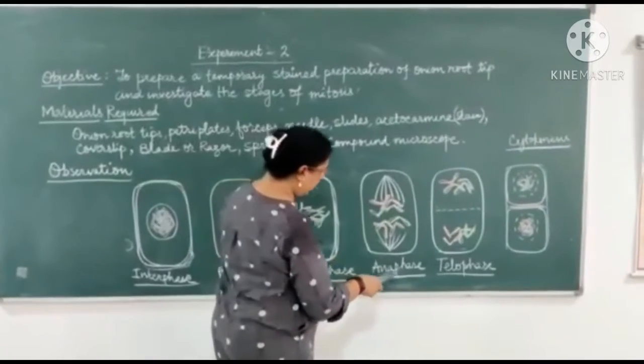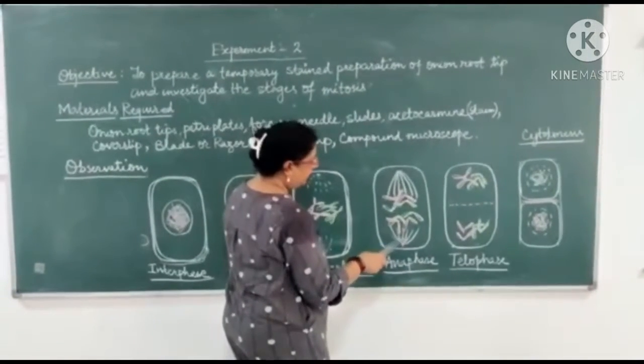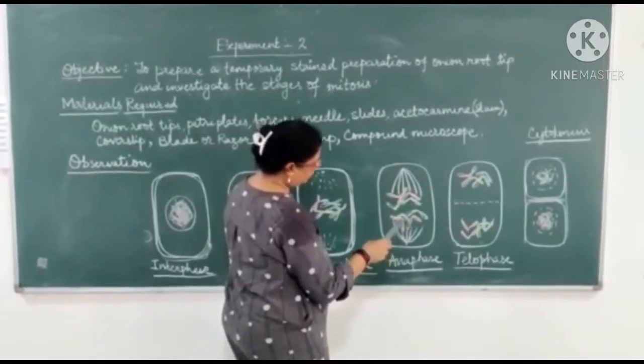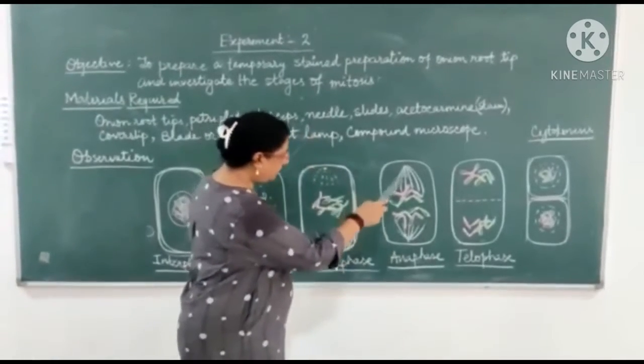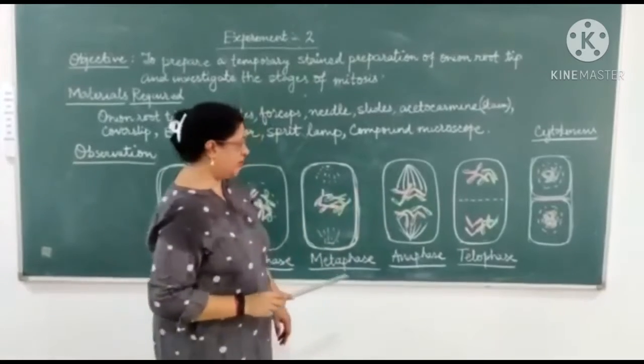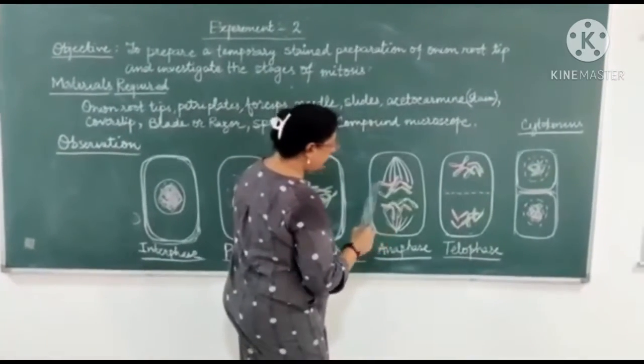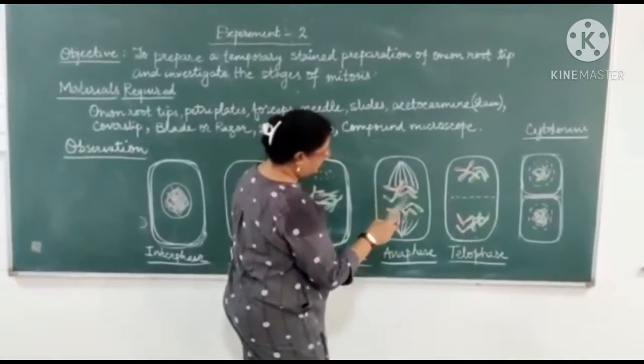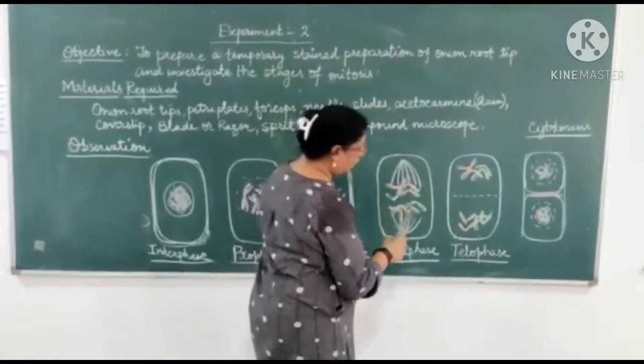In the next phase, anaphase, the spindle fibers get attached to the centromere of the chromosomes and they pull the chromosomes apart towards the opposite poles. Chromosome gets split into two parts and the split ends travel to opposite poles.